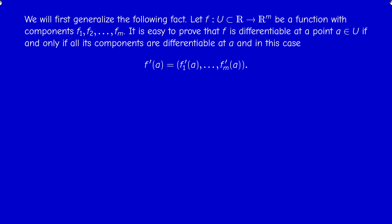The first topic is to generalize a very elementary fact. If you have a function with M components of real variables, it is easy to prove that F is differentiable at a point if and only if all its components are differentiable. In this case the derivative is just the vector whose components are the derivatives of each component.